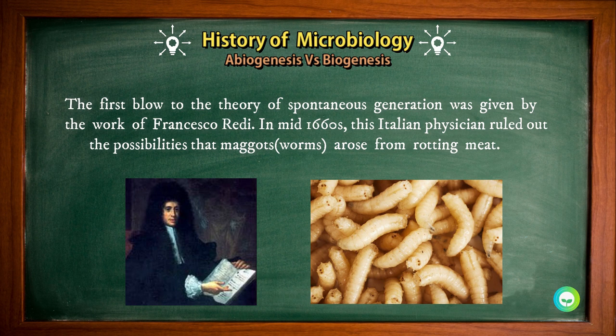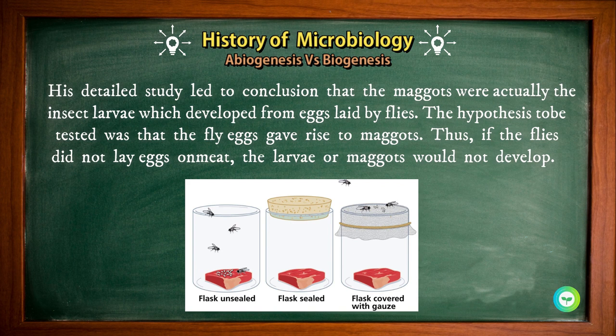The first blow to the theory of spontaneous generation was given by the work of Francisco Redi. In the mid-1660s, this Italian physician ruled out the possibility that maggots or worms arose from rotting meat. His detailed study led to the conclusion that maggots were actually insect larvae which developed from eggs laid by flies. The hypothesis to be tested was that fly eggs gave rise to maggots — thus, if flies did not lay eggs on the meat, the larvae or maggots would not develop.